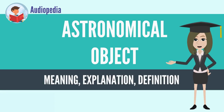An astronomical object or celestial object is a naturally occurring physical entity, association, or structure that exists in the observable universe. In astronomy,